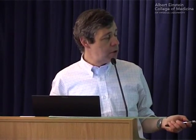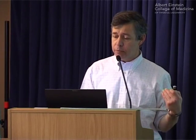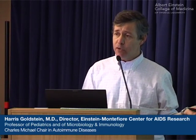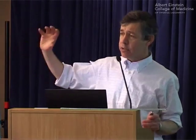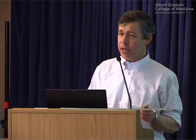In summary: how do CD4 T cells orchestrate appropriate responses to infecting pathogens? They differentiate into the appropriate subtype making the appropriate cytokines. How do they differentiate appropriately into Th1, Th2, Th17, or Treg? Through positive cytokine signals specific to each pathway and negative signals that prevent differentiation into alternative pathways. How do diverse cytokines transmit signals mediating divergent responses? Using JAK-STAT signaling — different families of JAKs interact with different families of STATs that bind to different gene families. Thanks for your attention — we'll start mucosal immunity after lunch.